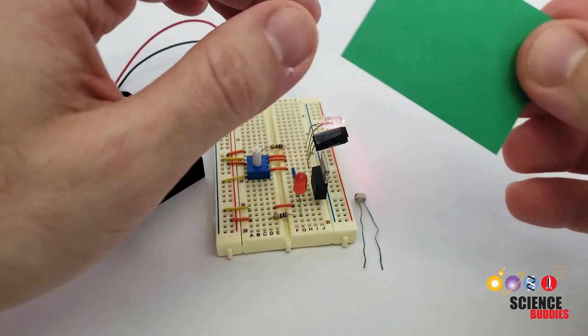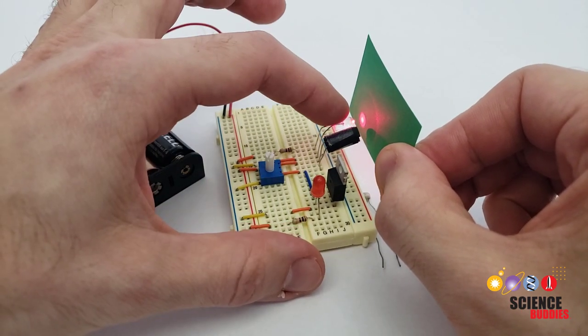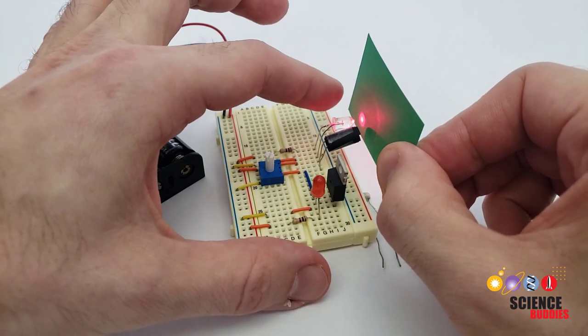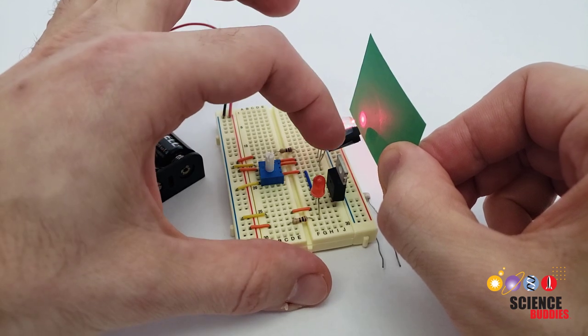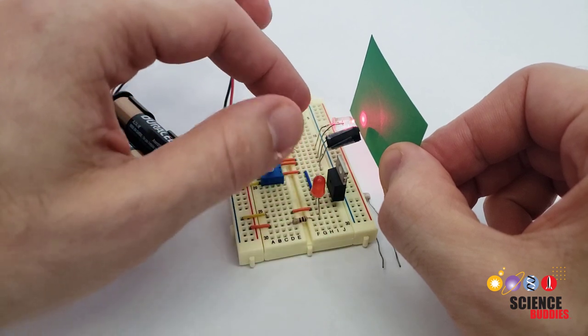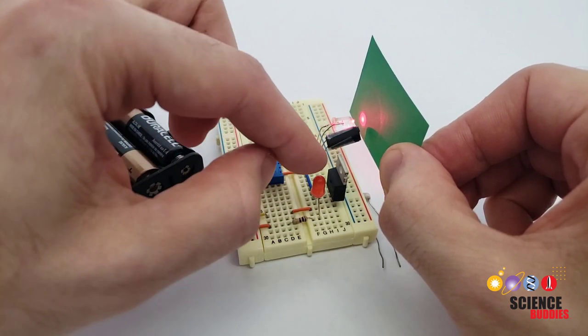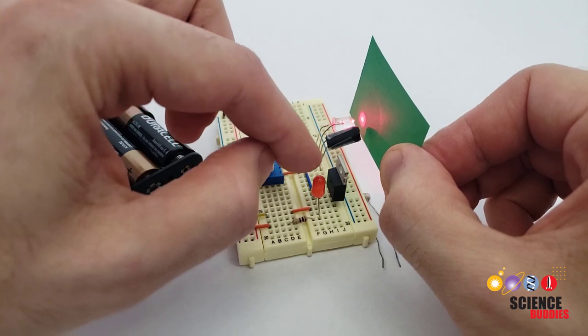However, if I hold something else like this green piece of paper in front of the LED and the photoresistor, most of that red light is absorbed. It's not reflected back to the photoresistor, so the photoresistor's resistance is very high, and the rest of the circuit that's controlling the LED causes this indicator LED to turn off.